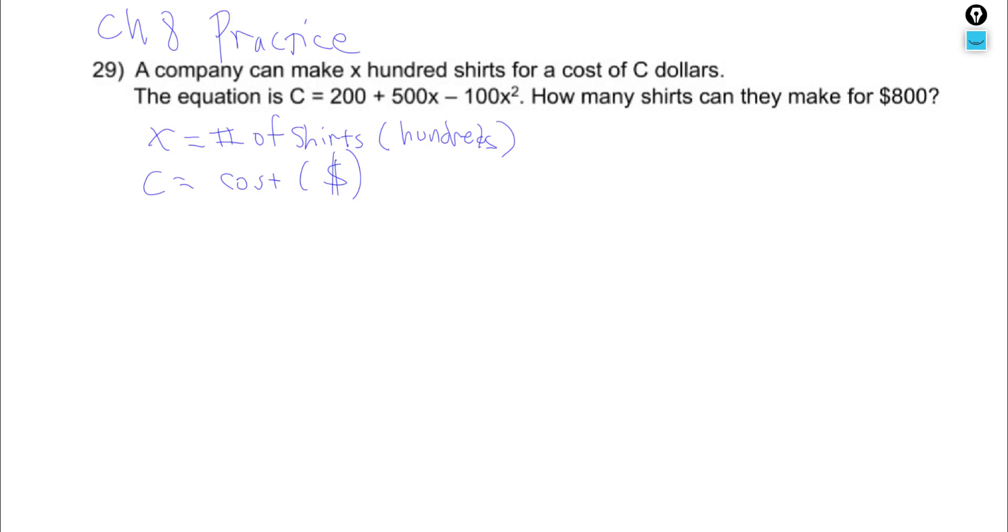Now we've got a formula. We've got this formula. C equals 200 plus 500X minus 100X squared. And our job is to find X.